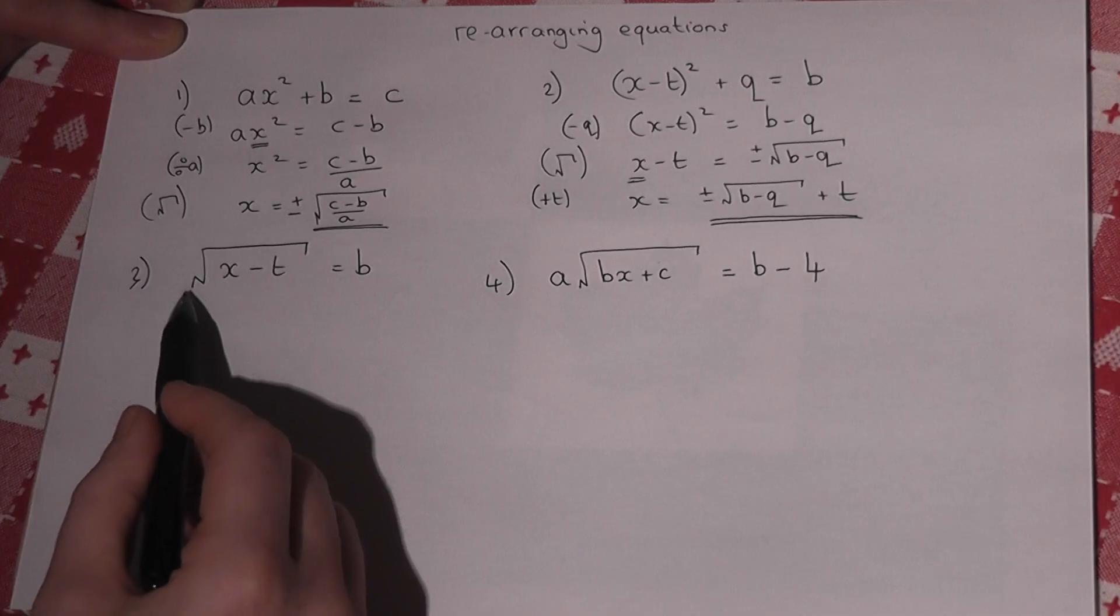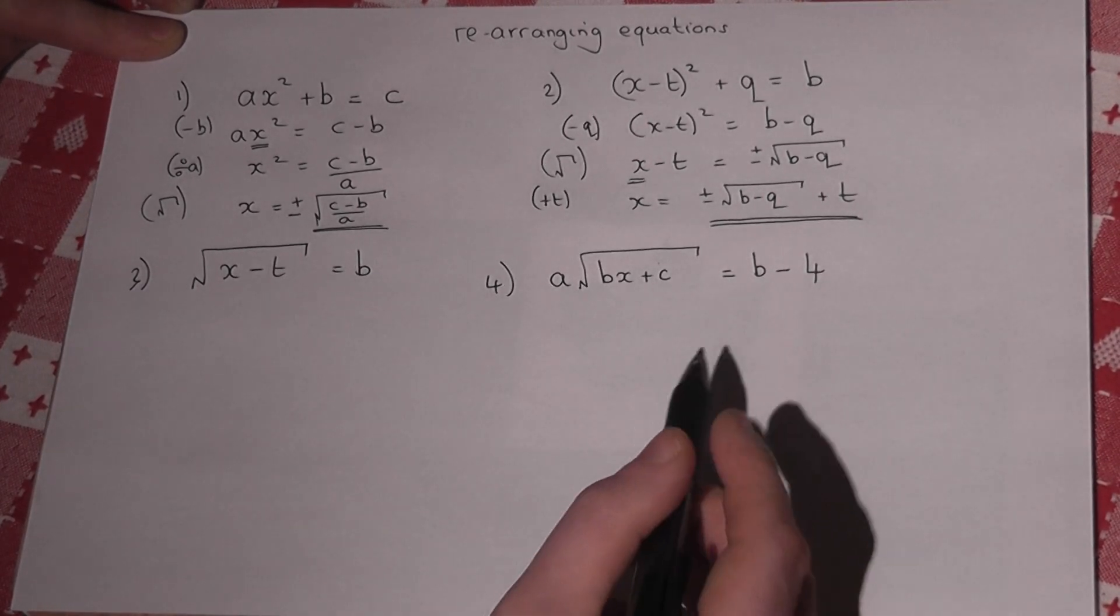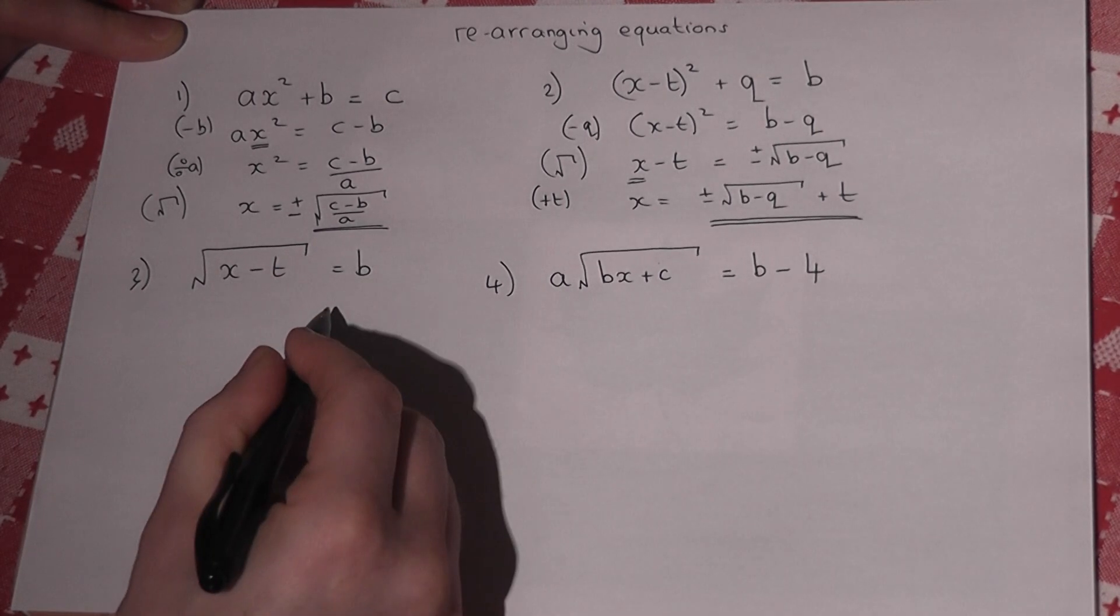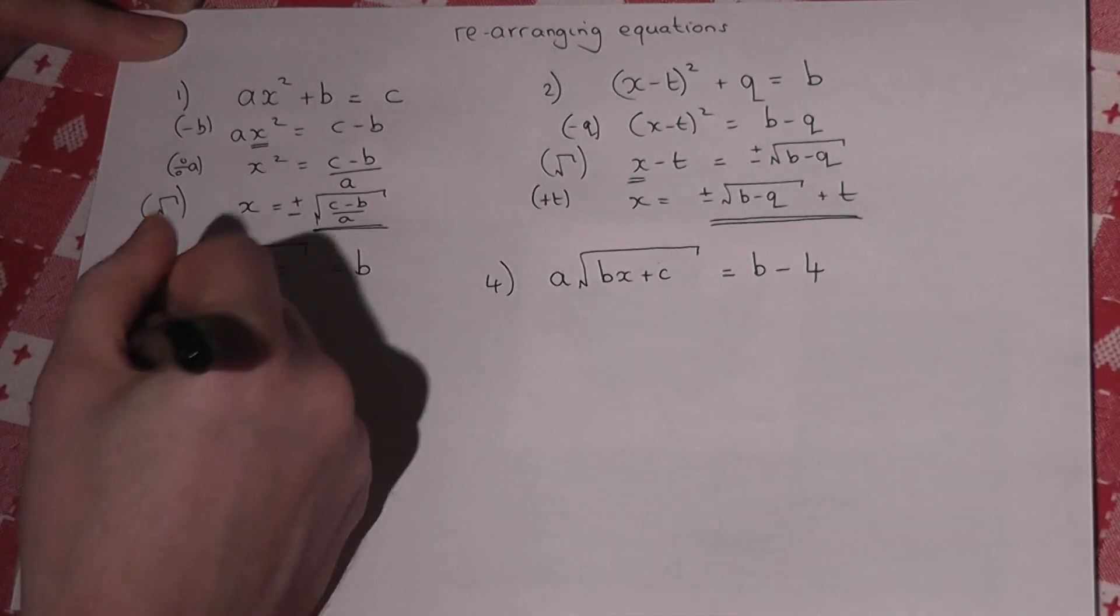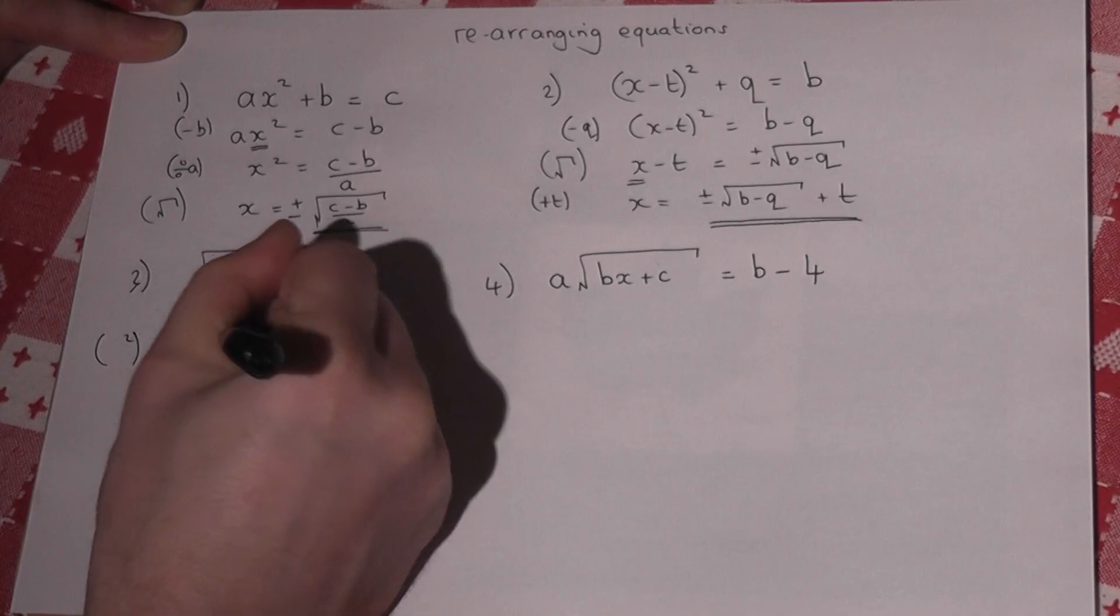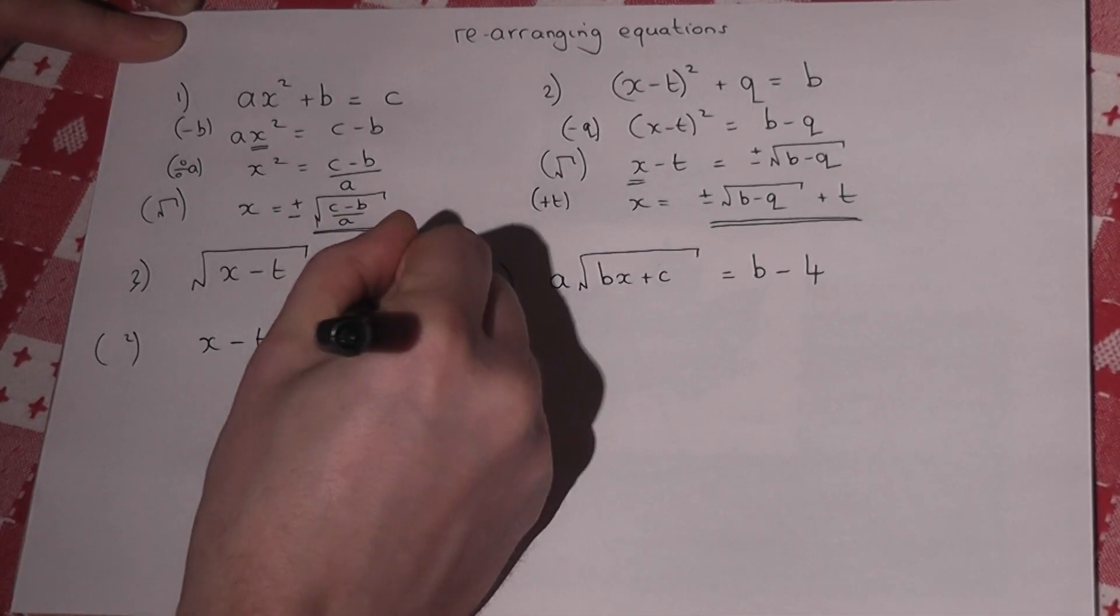When the equation actually has a square root in, at some point we must square to get to x. So I've got a big square root there equals b. And I want to cancel off the square root. So if I square, to begin with, this leaves me with x minus t. And this just equals b squared.